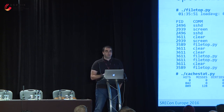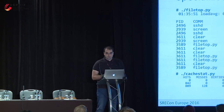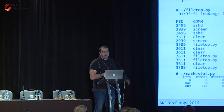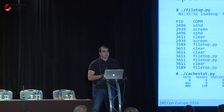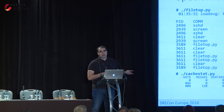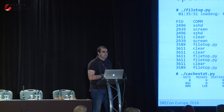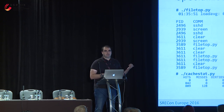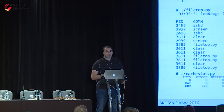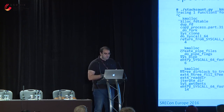Filetop is a BPF-based tool that gives you the files being accessed on the system in a specified interval — kind of like top but for files. You see processes, how many reads and writes they did, and the file names accessed. Cachestat gives you a report of file system cache utilization: hits, misses, reads and writes satisfied by the cache, and the cache size in megabytes. Someone in yesterday's workshop suggested adding process-level statistics too, which would be trivial using BPF.